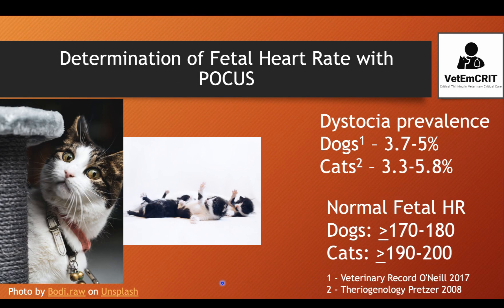In this video, we'll talk about how to obtain a fetal heart rate with point-of-care ultrasound. Dystocia is very common in small animal practice — up to 5% of dogs and cats parturitions may be associated with dystocia. One of the most important steps while assessing a patient with dystocia is to determine if fetuses are viable, and if so, what are their heart rates.